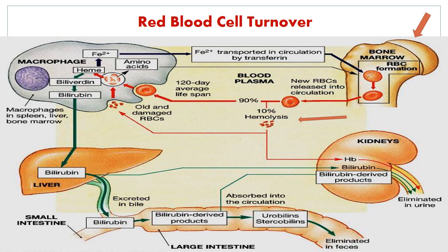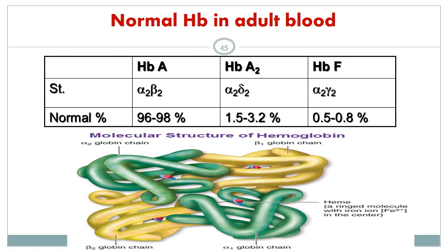Protoporphyrin is broken down to produce carbon monoxide — which is expired — and biliverdin. Biliverdin undergoes reduction to produce bilirubin (unconjugated bilirubin). Unconjugated bilirubin is taken up by the liver for conjugation and released in the bile. It then enters the small and large intestines for deconjugation and reduction, ending in formation of stercobilin (which colors the stool) and urobilin (which is partially excreted via the kidney in urine).